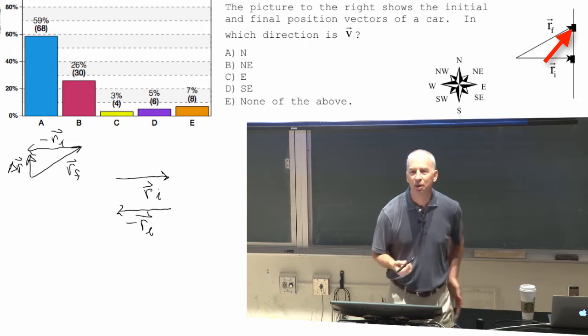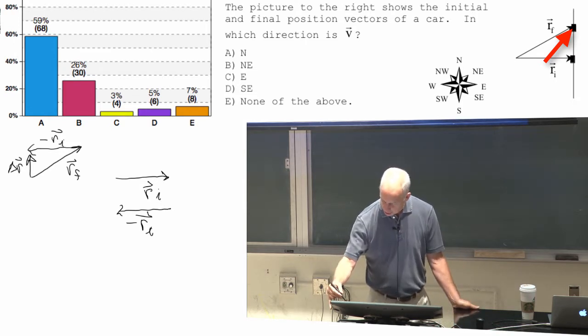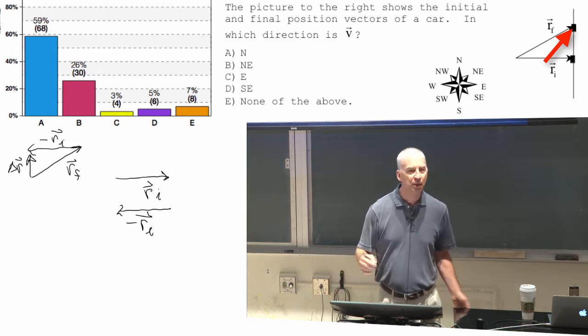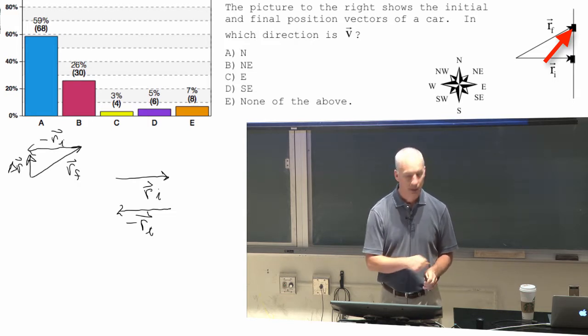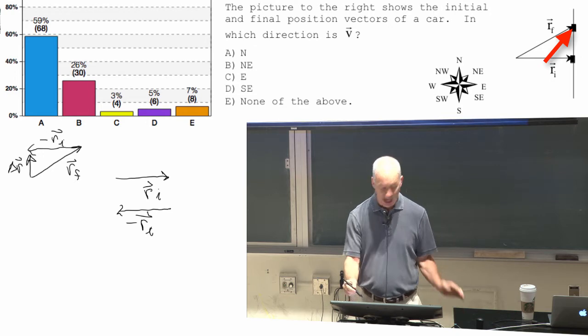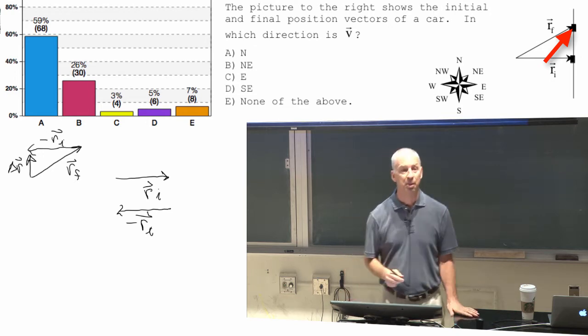If you're driving along a road and you go from there to there, what direction are you traveling? You're traveling directly north. North is, as I've defined it here, just straight up the page.